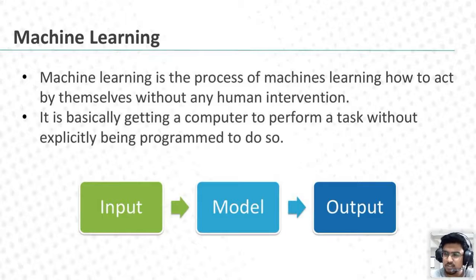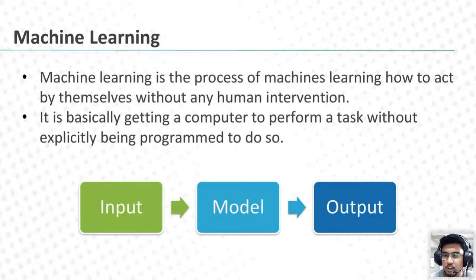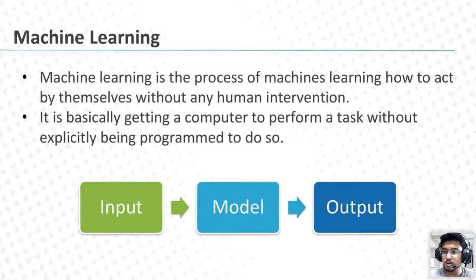Do we need to give some input to the machines? Yes. At the initial level, human intervention is required, but later on no human intervention is needed — things perform automatically. Here you can see: input, model, and output. We are going to make a model. For example, a dog versus cat classifier. Whenever I show the image of a cat, it will show me 'this is a cat,' and whenever I show the image of a dog, it will say 'this is a dog.' Before training, the machine doesn't know what a cat or dog means. So we train it — we give the input to the model, and it gives you the output.